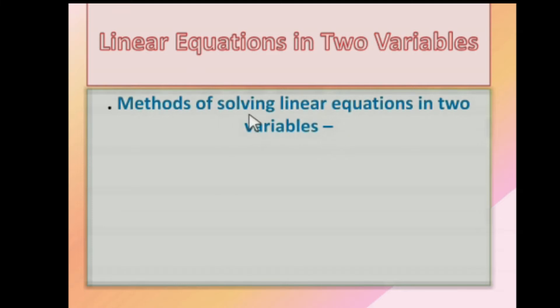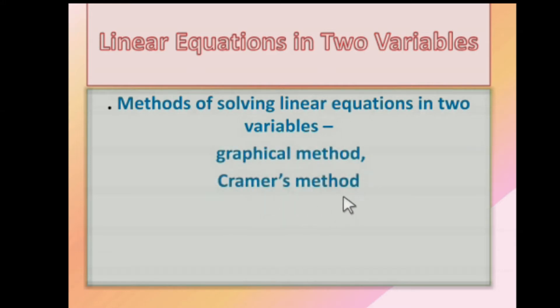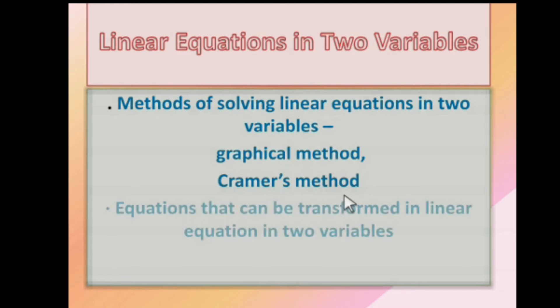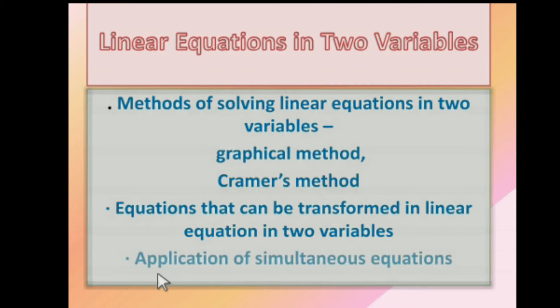The first thing we learn in this chapter is the method of solving linear equations in 2 variables. It has two methods: the first is the Graphical Method, and the second is Cramer's Rule Method. Further in this chapter, equations that can be transformed into linear equations will be taught, along with applications of simultaneous linear equations. This is the first video where I will be talking about the graphical method of solving linear equations in 2 variables.